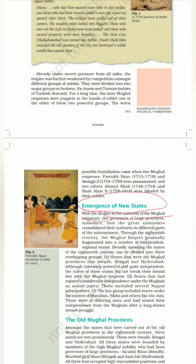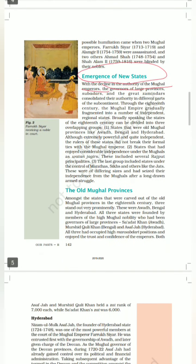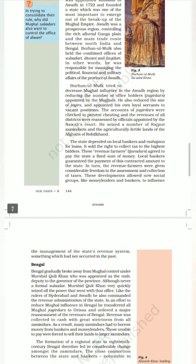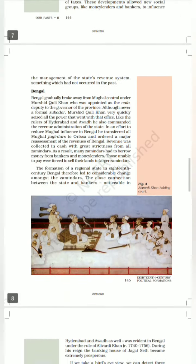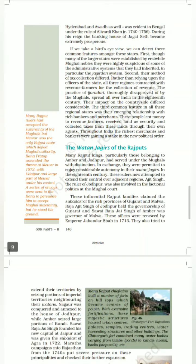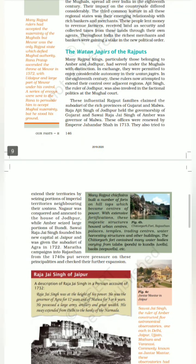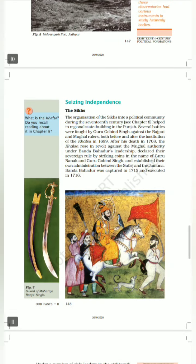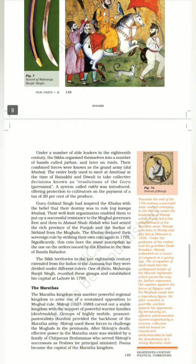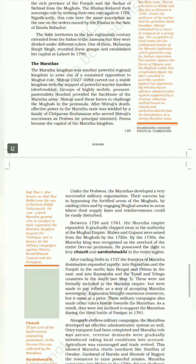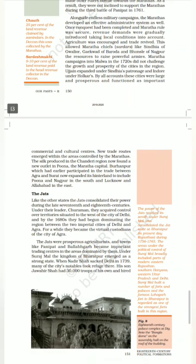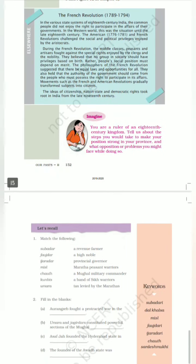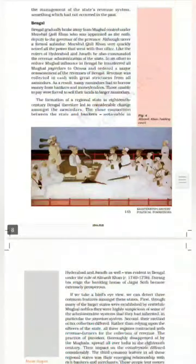This NCERT covers the crisis of the empire and the later Mughals, the emergence of new states, and the decline in the authority of the Mughal emperors. We have the old Mughal provinces — Hyderabad, Awadh, and Bengal — then the Jagirs of the Rajputs, and how Sikhs, Marathas, and Jats got their independence, ending chapter 10.